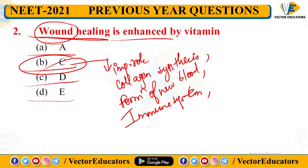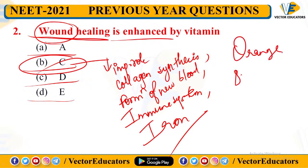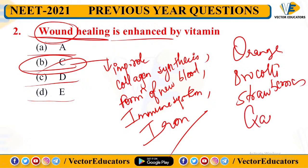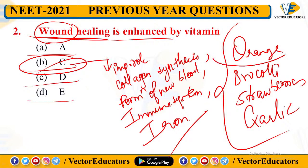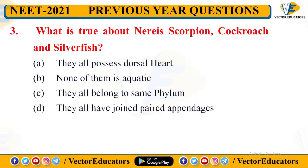Vitamin C also increases immune system function and enhances maximum absorption of iron in the body. Foods rich in Vitamin C include orange, broccoli, strawberries, and garlic. Orange is the best and most easily available source. So wound healing is enhanced by Vitamin C — B is our correct answer.